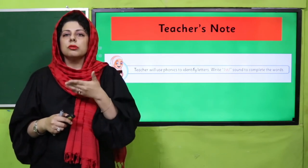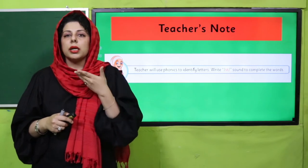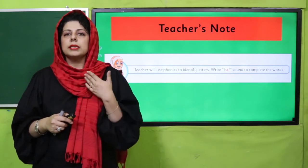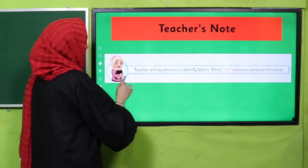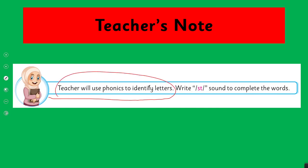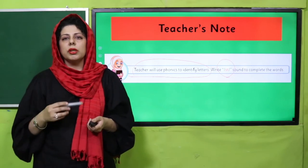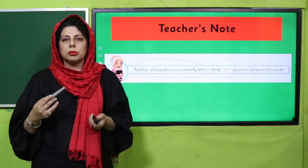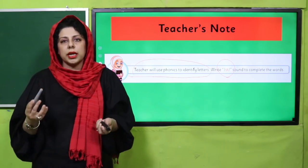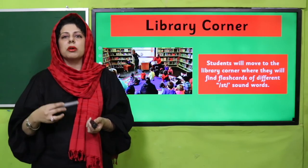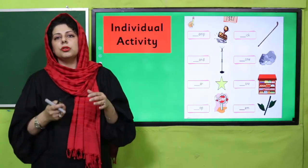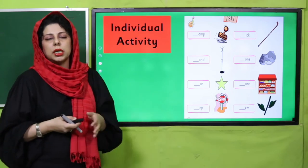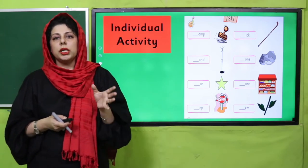Teachers, aap ne jo bachon ke saath flashcards and this vocabulary ke hain, woh share karni hain. Make sure they are pronouncing the sound ST, ST, ST clearly and loudly and saying different words. Aaj teachers aapne phonemic identification ke liye ST ki sound — it's quite a tricky sound, but make sure you are giving them enough opportunity to speak words. You can use the library corner as a resource. Make sure ke aap itne resources classroom mein rakh rahi hain ki bachon ke paas pictorial ya real objects hon.